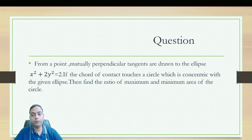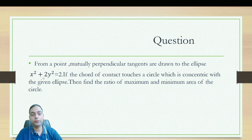Hello students. In this video, I am going to discuss a very interesting question from the topic ellipse. The question is: from a point, mutually perpendicular tangents are drawn to the ellipse x² + 2y² = 1. If the chord of contact touches a circle which is concentric with the given ellipse, then find the ratio of maximum and minimum area of the circle.